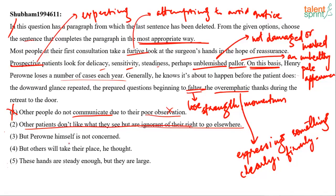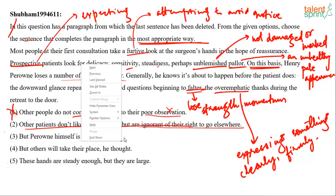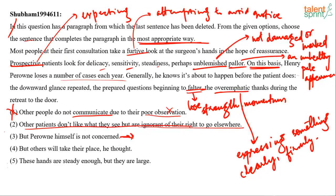Option three says he himself is not concerned — he knows it is going to happen. It talks about everything that is in the passage. Notice the phrase 'each year,' which tells us that losing patients is not uncommon for him. He may not be very bothered about losing patients. So this option says he is not concerned or bothered about losing his patients. Let's keep options two and three.